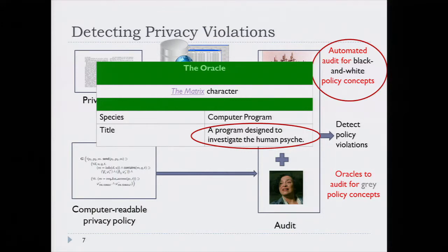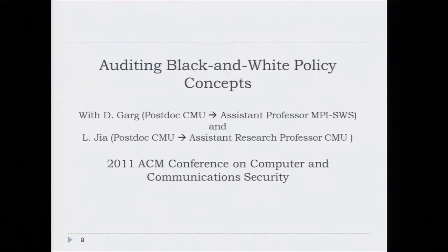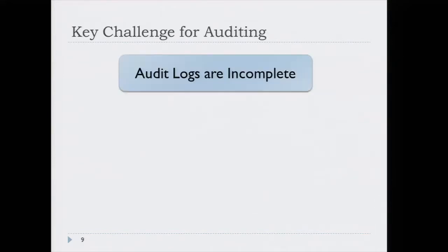This second class of algorithm is really tricky because we are essentially trying to understand the human psyche — trying to understand whether a person accessed personal information for treatment or for some other reason. While we're not quite there yet to have the all-powerful oracle, we are trying to approximate it with ideas from artificial intelligence. One of the central challenges for auditing in this setting is that audit logs tend to be incomplete — they do not always have sufficient information to make a complete determination about whether the policy is satisfied or violated.